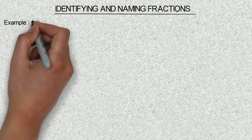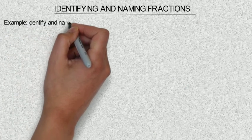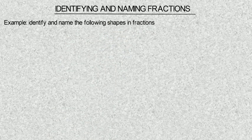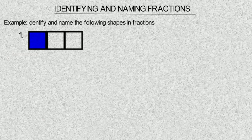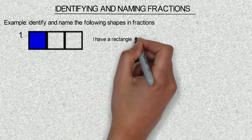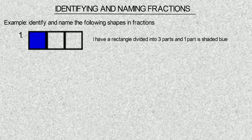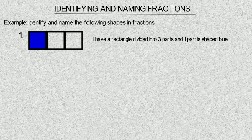Now we look at identifying and naming fractions. Example: identify and name the following shapes in fractions. Can you see the picture? I have a rectangle divided into three parts and one part is shaded blue. Can you tell me what the fraction is? Okay, how many parts is shaded? One. So we have it to be one over three, which is one third.